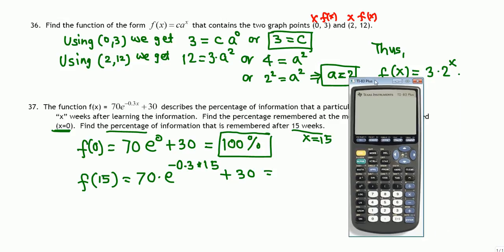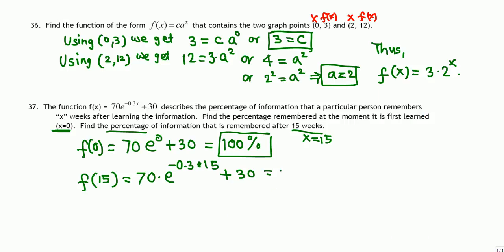Using a calculator: enter 70 times e raised to negative 0.3 times 15, then plus 30. That gives approximately 30.78. So after 15 weeks, about 30.78% of the information is remembered.